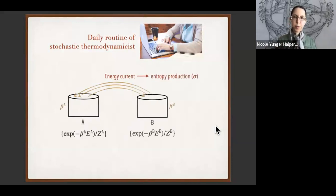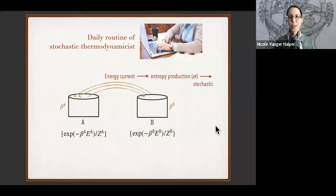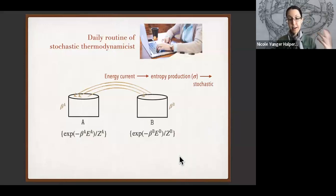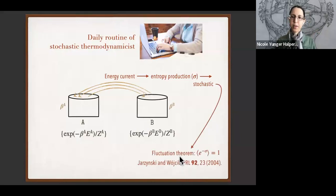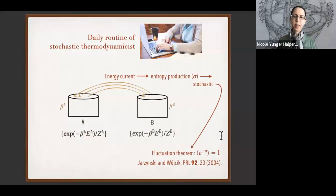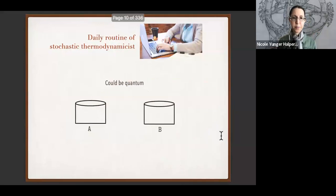The entropy production is stochastic — it varies from trial to trial — and the probability that the next trial will cost entropy production sigma obeys fluctuation theorems, generalizations of the second law of thermodynamics. Let's generalize this story: our systems could be quantum, and they could exchange multiple things.